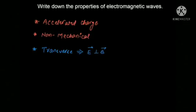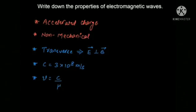The next property is that in vacuum, electromagnetic waves travel with the speed of light — their speed is constant, equal to c = 3 × 10⁸ meters per second. If the wave enters a medium with refractive index μ, the speed is given by v = c/μ.